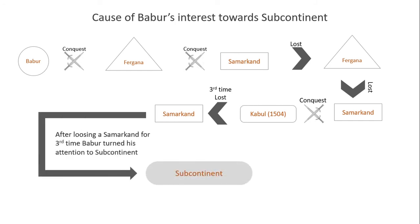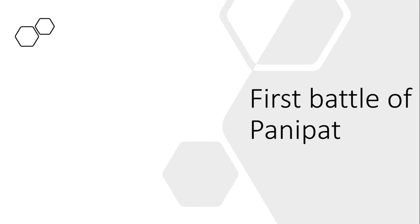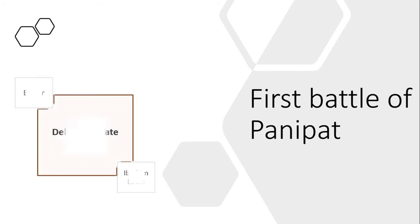After losing Samarkand for the third time, Babur turned his attention to the Indian subcontinent. Babur's first conquest into India began in the Delhi Sultanate controlled region of Punjab. Ibrahim Lodhi dynasty was the ruling Sultanate at that time. Babur attacked Ibrahim Lodhi in 1526 at Panipat — this battle is also known as the first Battle of Panipat. In this battle Babur also received artillery aid from Turks of the Ottoman Empire.